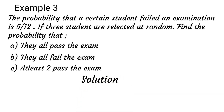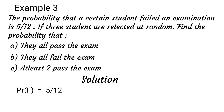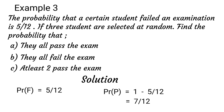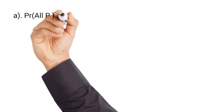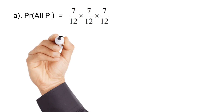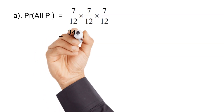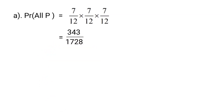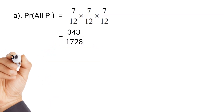Solution: the probability that the student failed the exam is 2 over 5. The probability that he passes will be 1 minus 2 over 5, which is 3 over 5. Probability that all three pass will be 3 over 5 times 3 over 5 times 3 over 5, since we are picking three students. That gives us 27 over 125. For all fail: 2 over 5 times 2 over 5 times 2 over 5.